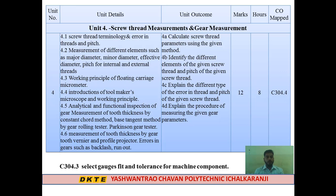Topic 4.2 covers measurement of different elements of screw threads, such as major diameter, minor diameter, effective diameter, and pitch — for both internal and external threads. For internal threads, we check the parameters using a floating carriage micrometer, a key measuring instrument. Various methods and steps will be covered.